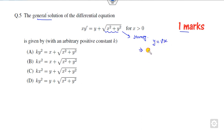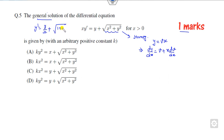Whenever it is homogeneous, you always start with the substitution y = vx. Then you can easily find that dy/dx is nothing but v plus x(dv/dx). From here you can substitute, taking x squared common, and the equation can be rewritten accordingly. You can again see it is homogeneous.